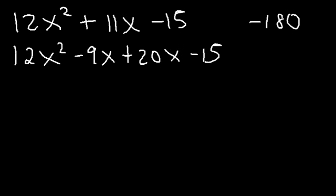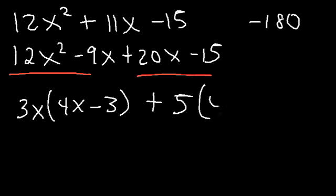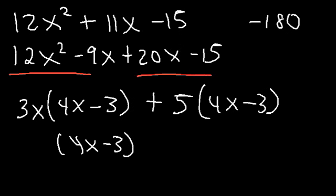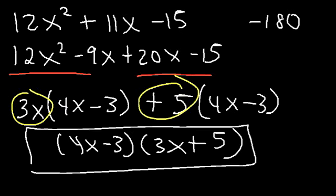Now let's factor by grouping. From the first two terms, take out 3x: 12x squared divided by 3x is 4x, and negative 9x divided by 3x is negative 3. From the last two terms, take out 5: 20x divided by 5 is 4x, and negative 15 divided by 5 is negative 3. Factoring out 4x minus 3 gives us 3x plus 5 on the outside. So the answer is 4x minus 3 times 3x plus 5.